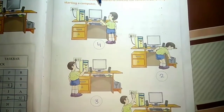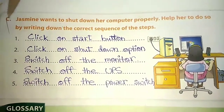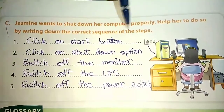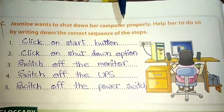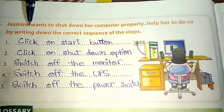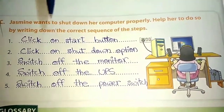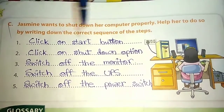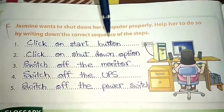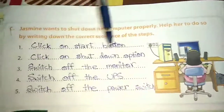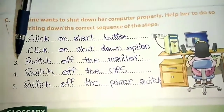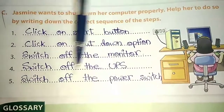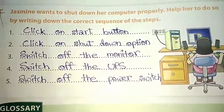The third question: Jasmine wants to shut down her computer properly. Help her by writing down the correct sequence of steps. First, click on the Shutdown option. Second, switch off the Monitor. Third, switch off the UPS. And last, close the switch of the Power Switch.